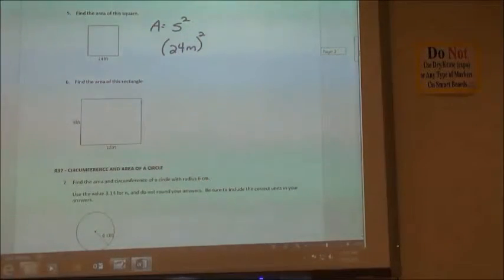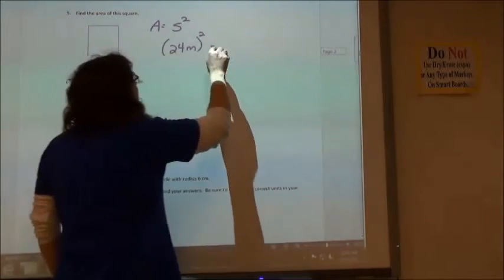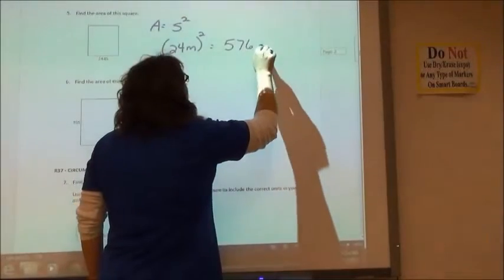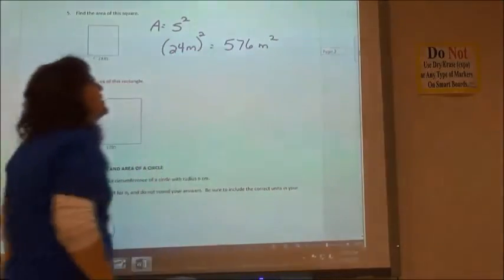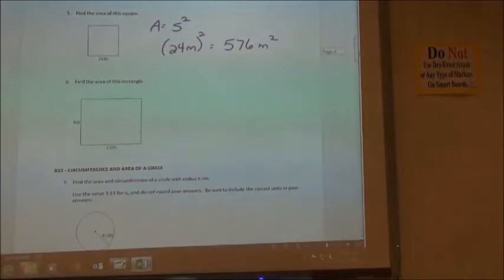So if you do that, you would end up with what? You can either do the x squared key or caret 2 and then hit equals. So we get 576, and again my label is always going to be in that square unit, so meters squared.